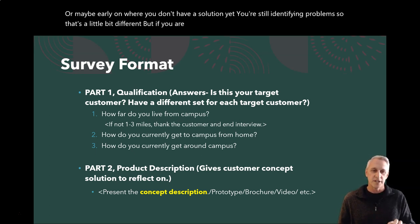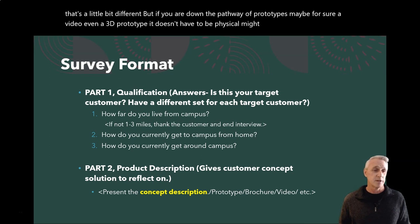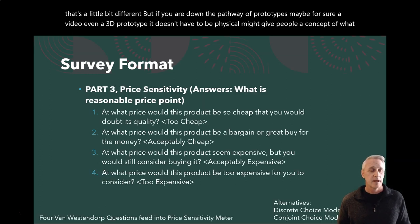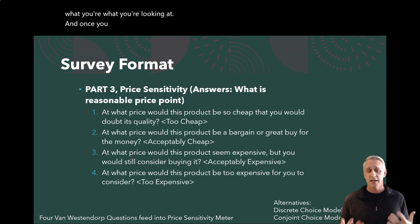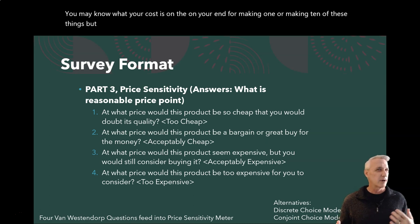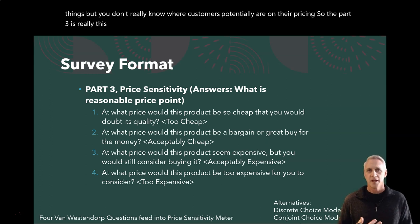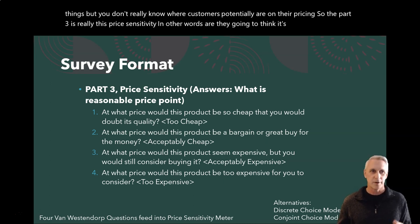But if you are down the pathway of prototypes, maybe a video or even a 3D prototype — it doesn't even have to be physical — might give people a concept of what you're looking at. Once you have that, particularly at a beta test level, you may know what your cost is on your end for making one or ten of these things, but you don't really know where customers potentially are on their pricing. So Part Three is really this price sensitivity — are they going to think it's expensive, what's expensive, what's cheap, all those kinds of things.